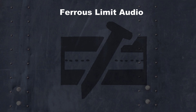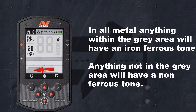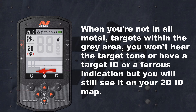Ferris Limits Audio: In all metal mode, anything within the grey area will have a ferrous tone. Anything not in the grey area will have a non-ferrous tone, depending on how you set your target tones. When you're not in all metal, targets within the grey area won't produce a target tone, target ID, or ferrous indication, but you will still see them on your 2D ID map.